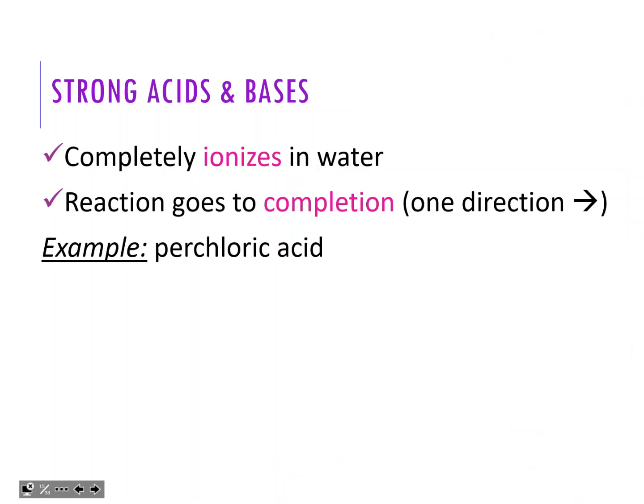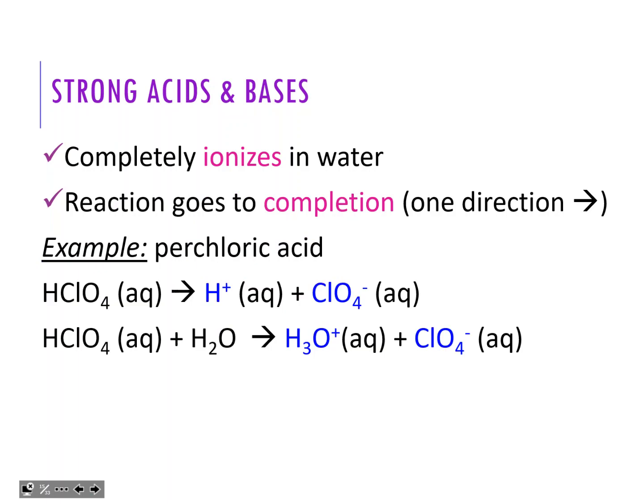For example, perchloric acid is one of our strong ones, so it's going to go to completion. I've represented it in both ways here: the top reaction breaking it apart into H+ and ClO4 minus is the Arrhenius type, and the bottom one is more Bronsted-Lowry where you're transferring the H. Either way, the only thing left in the beaker is going to be the products - there aren't any reactants anymore. They completely turn into ions.